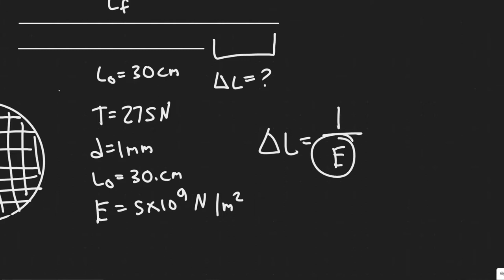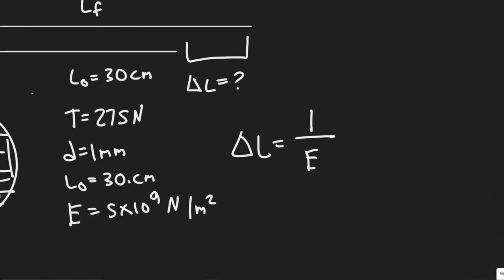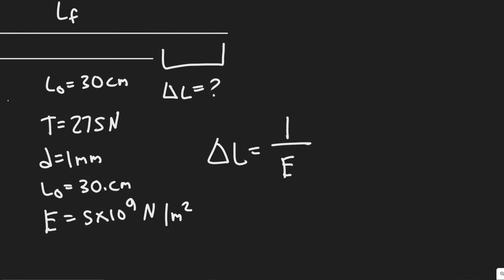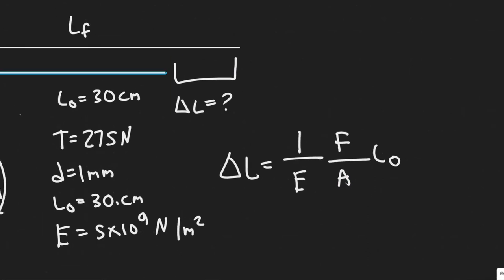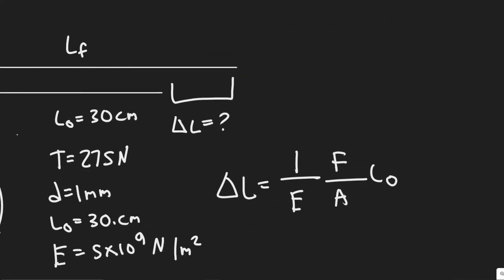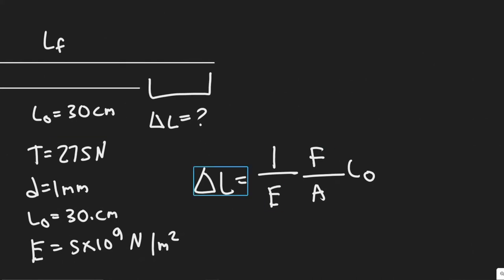And this is the Young's modulus, and it's different for every material, so it changes depending on the material, multiplied by F over A, multiplied by the initial length. So A is the cross-sectional area of our object. In this case, it's a string. F is the force being applied, so the tension.